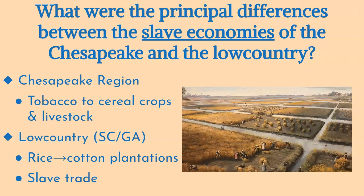While both the Chesapeake and the Lowcountry regions relied on slave labor, the differences in crop production and market demands led to distinct economic developments in each region. The Chesapeake saw a gradual decline in labor needs with the shift to cereal crops, whereas the Lowcountry experienced a surge in demand for enslaved workers as cotton cultivation expanded, making the internal slave trade a crucial part of the southern economy.